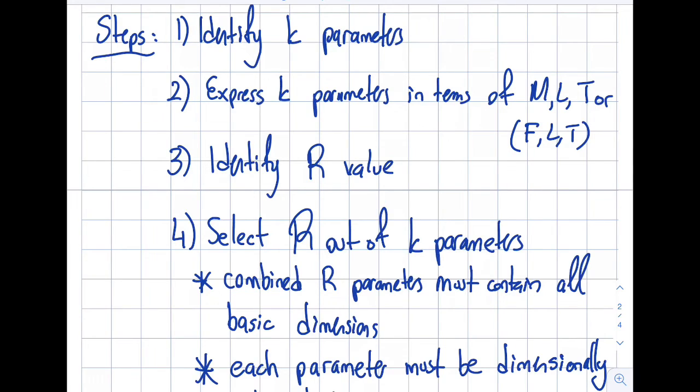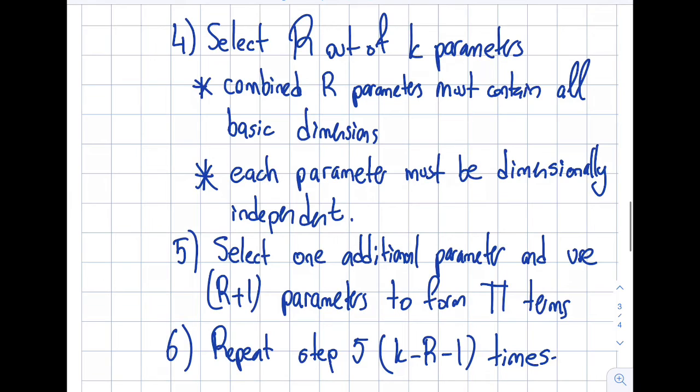So I put here two caveats. Number one, the combined as a combination of these three parameters as an example must contain all the basic dimensions. If your case depends on ML and T, the combination of these three parameters must represent ML and T. If they do not have mass for instance, that's not a good selection of these step number four.